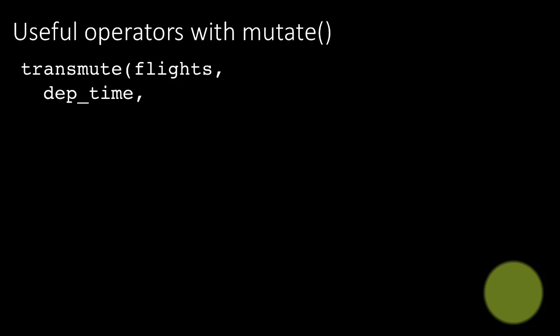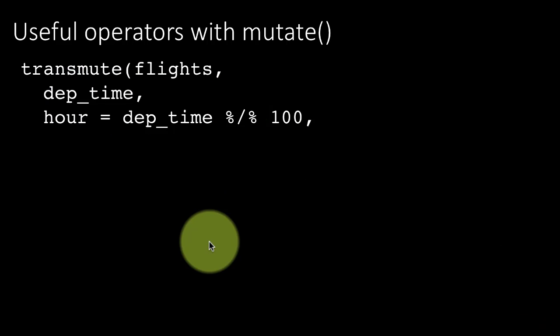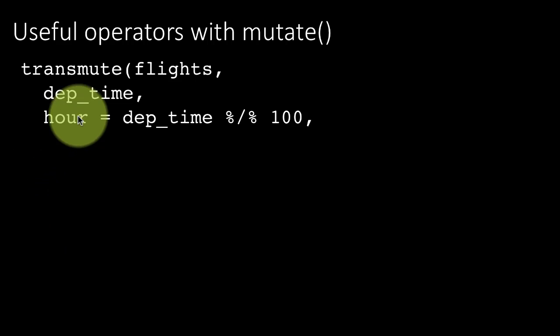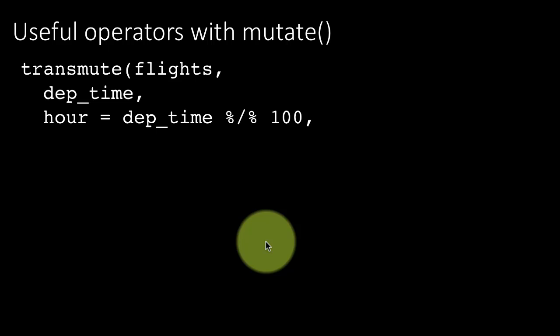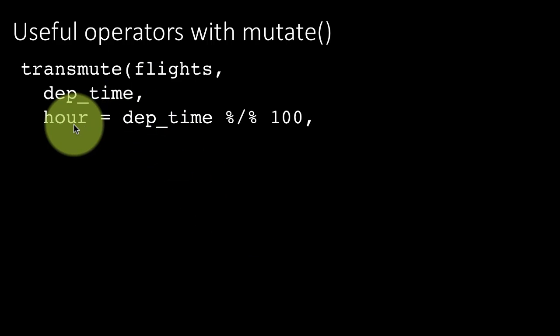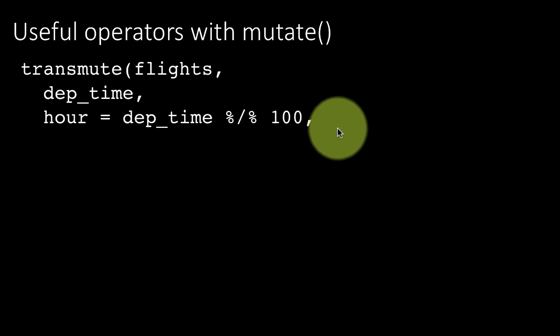We've got transmute flights departure time, and notice that departure times are recorded in the military format. So for example, 5:20 means 5:20 AM or 22:40 means 10:40 PM. Right. So you want to find, let's say from that, you want to find the hour and the minute.